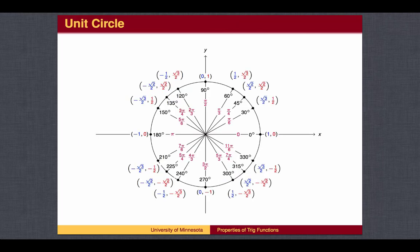We have developed a unit circle that will help us find the values of sine and cosine from 0 degrees to 360 degrees for certain angles. We can get other values by realizing that once we reach 360 degrees, we start over and the values of sine and cosine repeat.